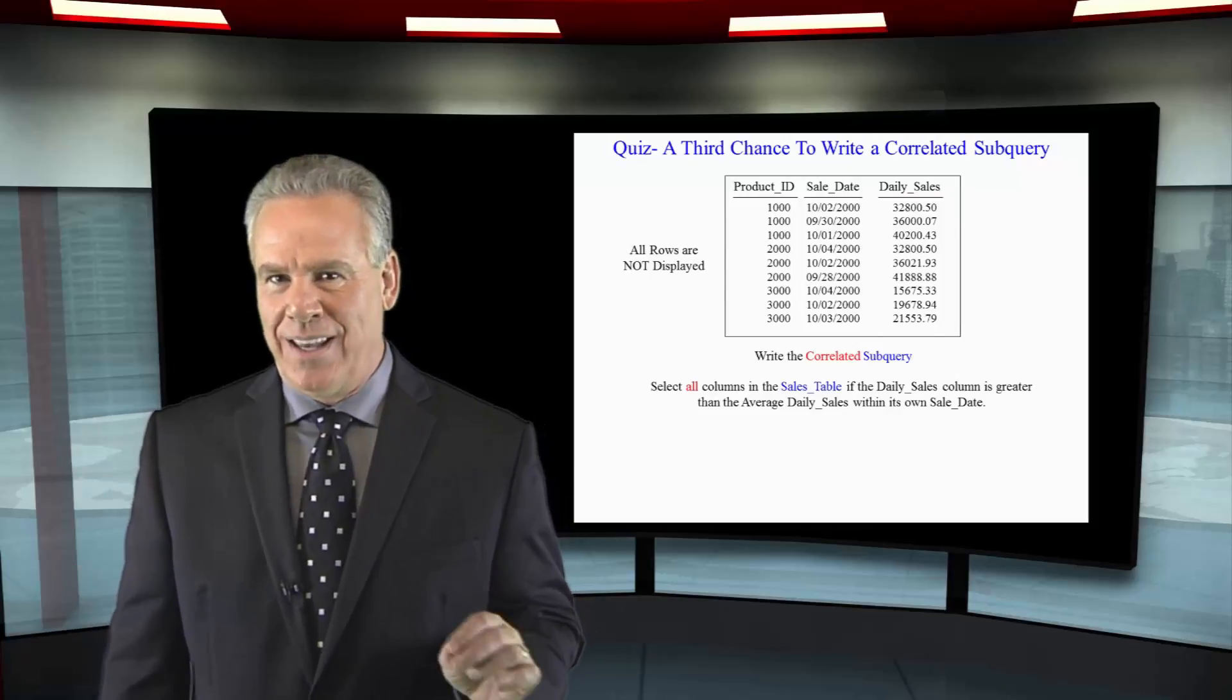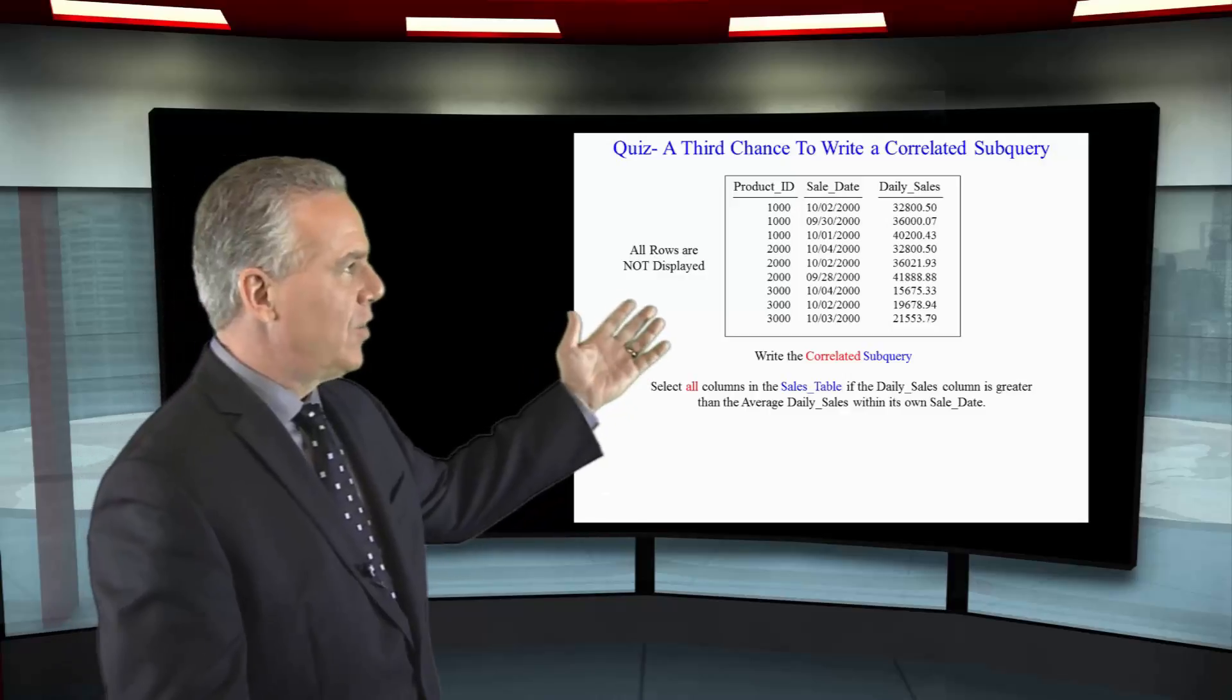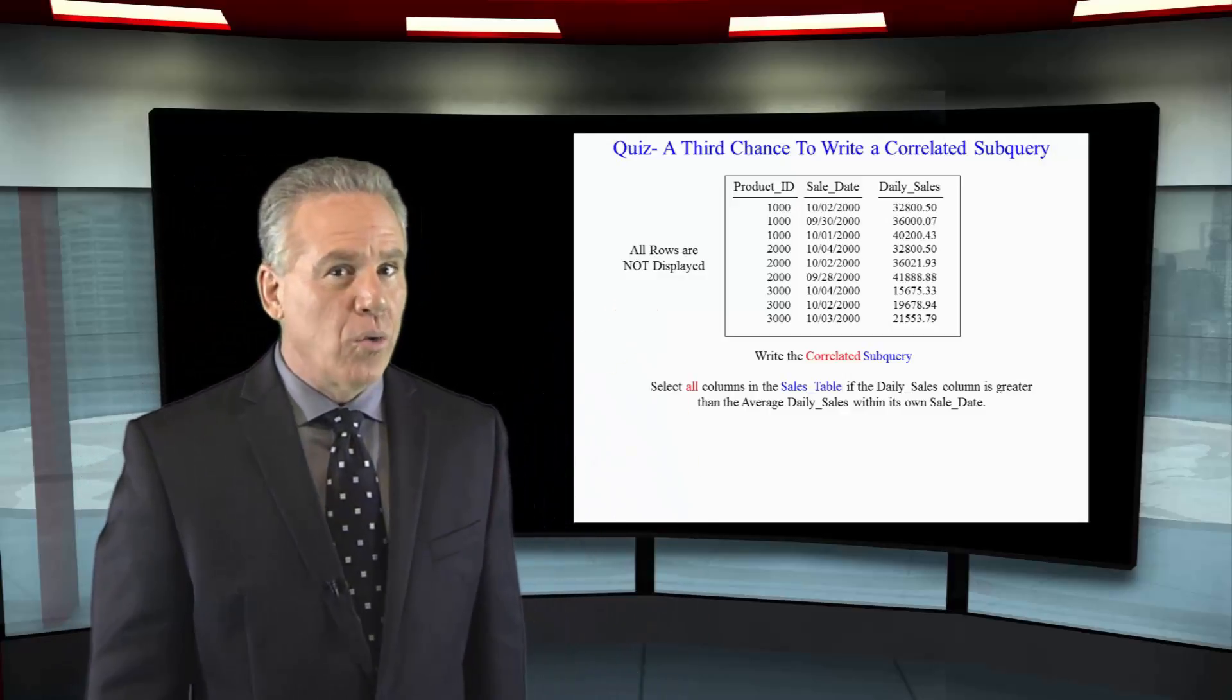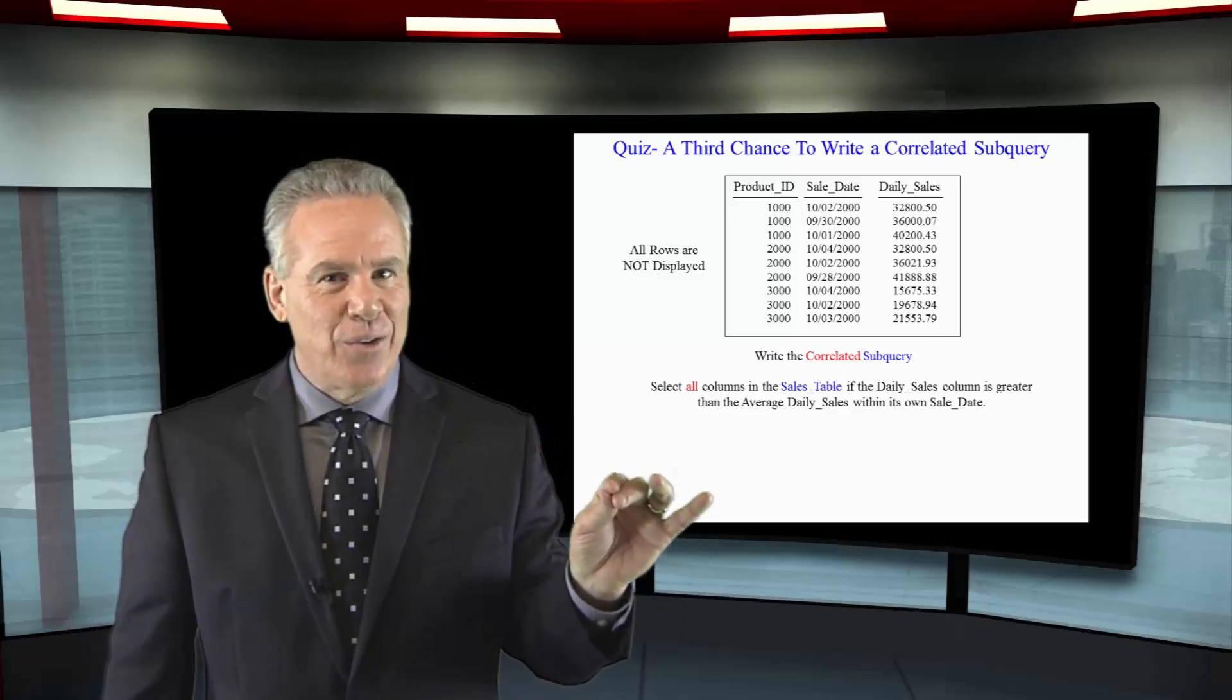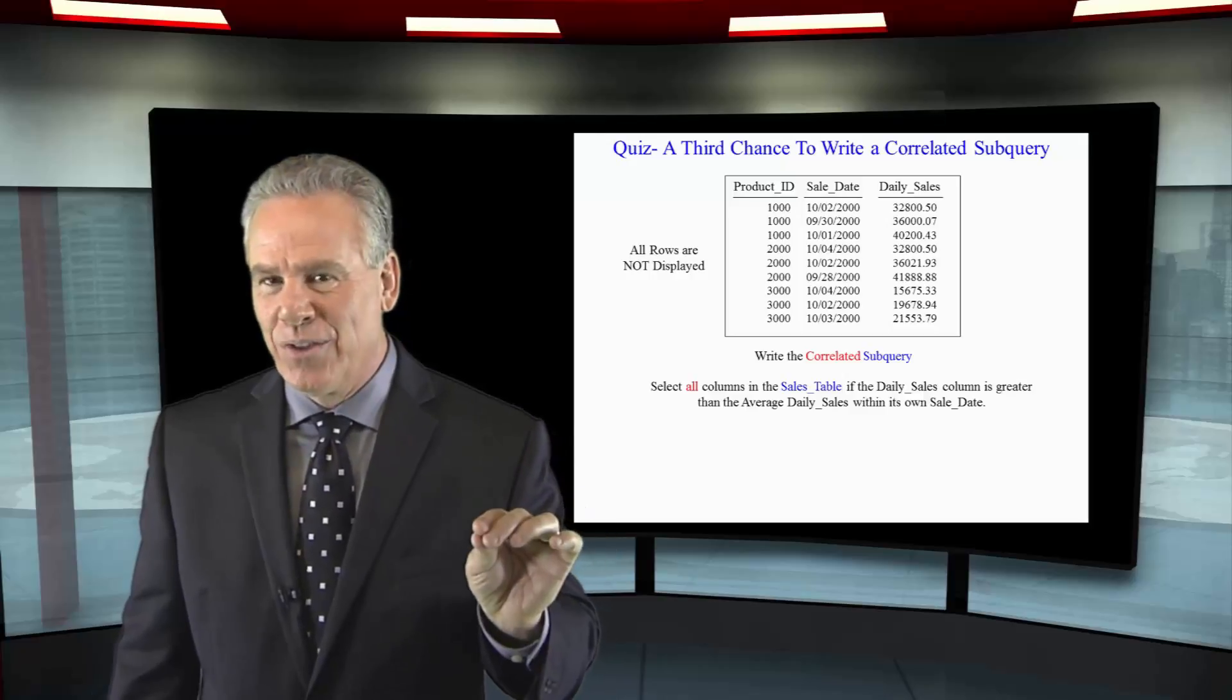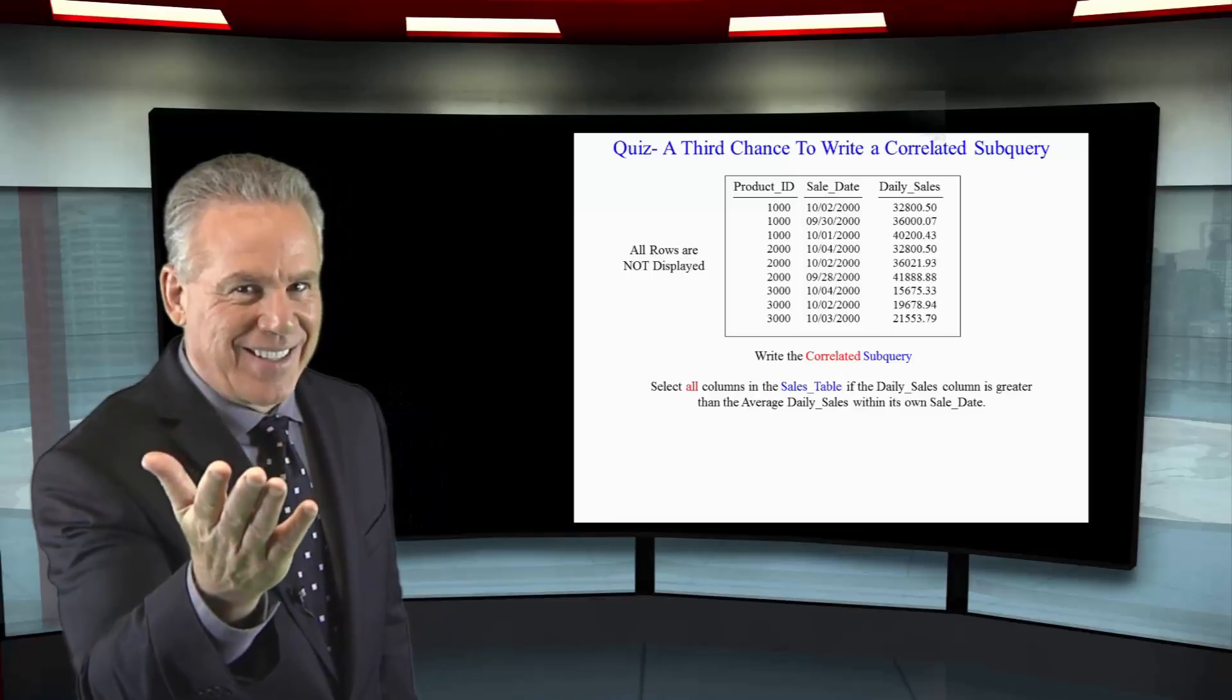Let's use the sales table again. Now you've got product ID, you've got sale date, and daily sales. Show me all the rows using a correlated subquery if the daily sales is greater than the average daily sales within its own sale date.